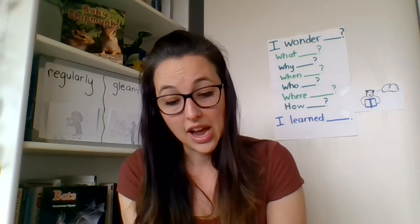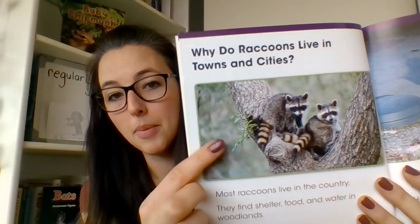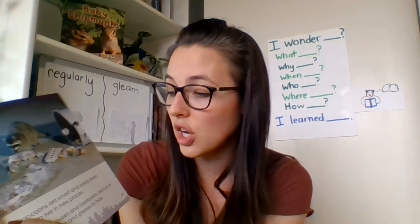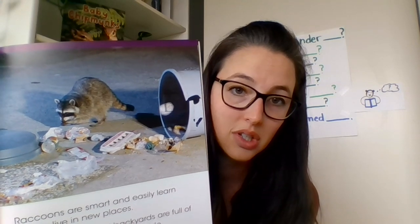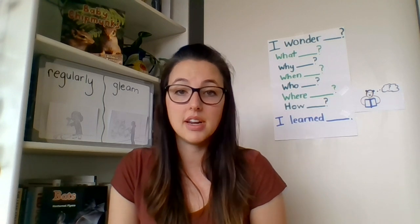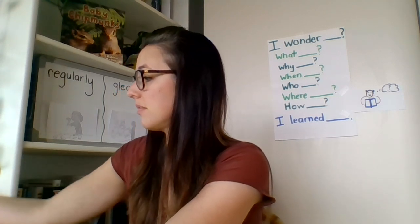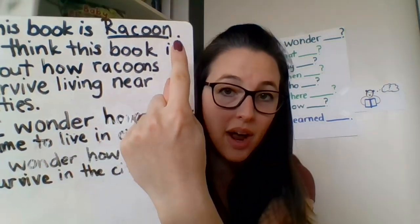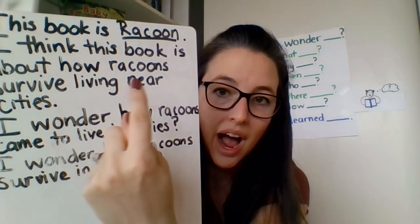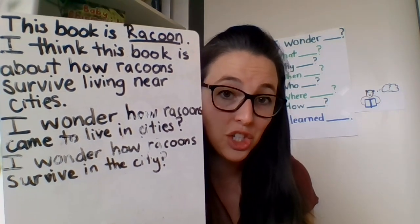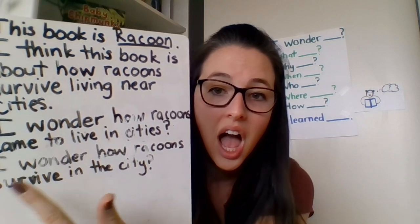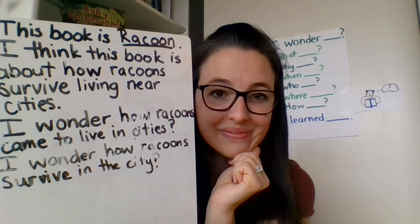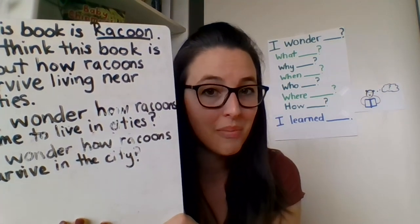Most raccoons live in the country — they find shelter, food, and water in woodlands, which are parks or forests. Raccoons are smart and easily learn how to live in new places. Human houses and backyards are full of things to eat and places to hide. I can see the photograph is showing that they're eating garbage. I'm going to pause when I'm done reading and write about my reading. I wrote: 'This book is Raccoon' — I put the title. 'I think this book is about how raccoons survive living near cities.' After I made that prediction, I had a couple of wonders: I wonder how raccoons came to live in cities, and I wonder how raccoons survive in the city. All right scholars, go get your nonfiction book and enjoy reading today.